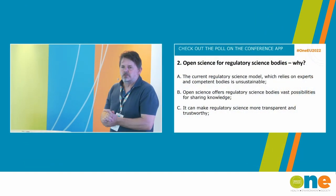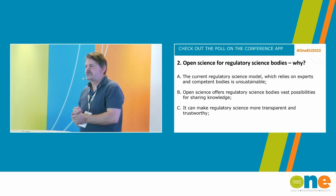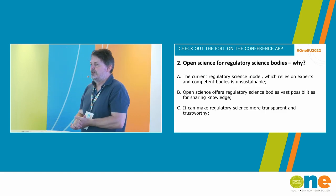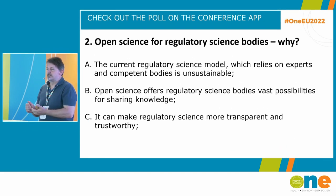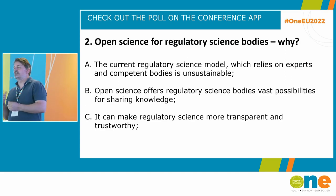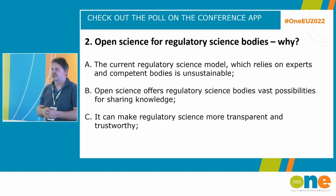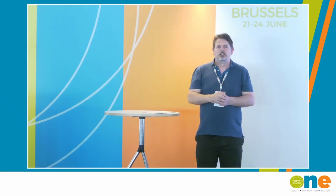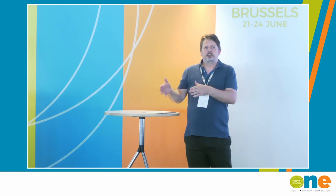We'll follow that up now with another poll. Open science for regulatory science bodies — why? Why should we do it? Option one: the current model, which relies on experts and competent bodies, is unsustainable. Option two: open science offers regulatory science bodies vast opportunities and possibilities for sharing knowledge. Option three: can it make regulatory science more transparent and trustworthy? There's an open science movement, and the question is how can we tap into that in regulatory science and bridge towards the regulatory area.